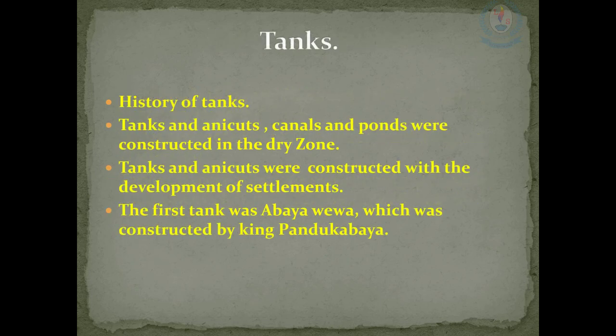Tanks and anicuts were first constructed in the dry zone of Sri Lanka. The dry zone received rain only during certain periods of the year. Therefore, people had a need for storing water required for their consumption and agricultural activities during the dry season. To fulfill this need, they started building tanks. The first tank built in Sri Lanka was Abhaya Wewa, constructed by King Pandukabhaya.